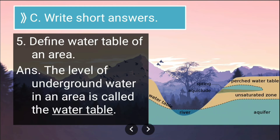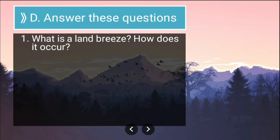Fifth short answer: define the water table of an area. The level of underground water in an area is called the water table.